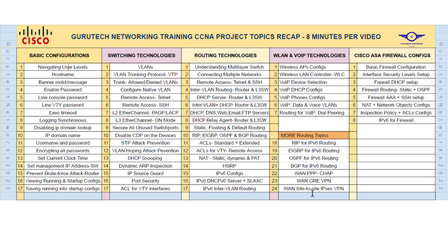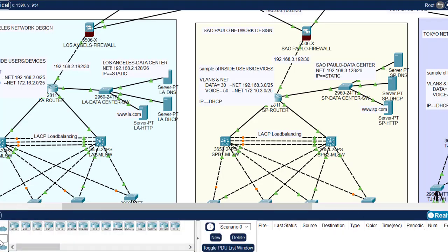Then we go to routing, where we have a lot of topics — up to 24 under routing — because routing is very wide. When we come to VLAN and VoIP technologies, we have a lot of topics there as well that we need to get well-versed with. You have to understand how to configure each of these technologies so that you can build any enterprise internal project. Then when you go to the security part, we're going to use a configuration file with parameters that we're going to configure.